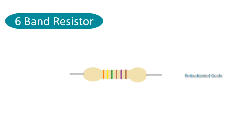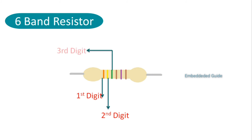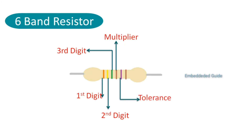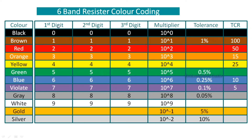Next we will check the 6-band resistor. We use this 6-band resistor in general for specific applications. There are 6 color bands: the 4th band is the multiplying factor, the 5th band is the tolerance value, and the 6th color band is the temperature coefficient. We will choose this table to calibrate the 6-band resistor resistance values and temperature coefficient based on the color.